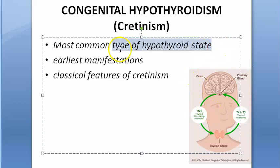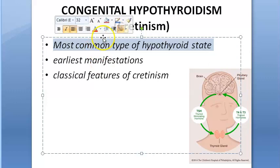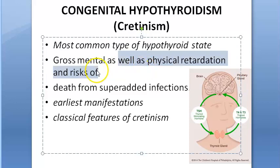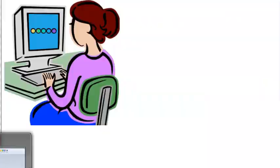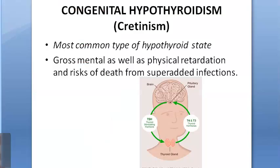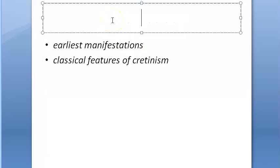Cretinism can lead to gross mental as well as physical retardation, and there is a risk of death from superadded infections. This is why this condition is so important. Let us now look at the earliest manifestations and classical features of cretinism.